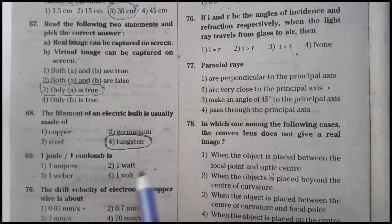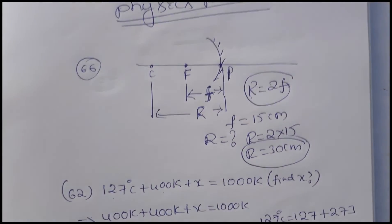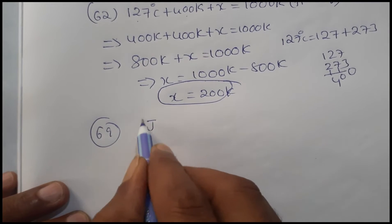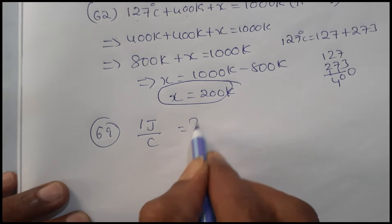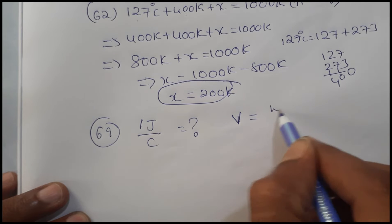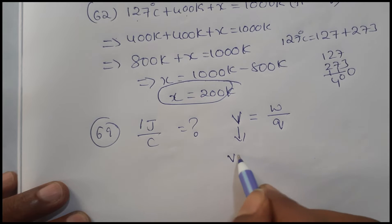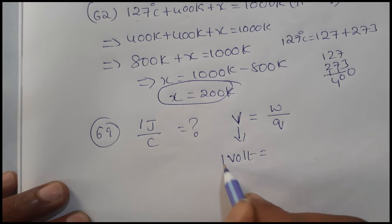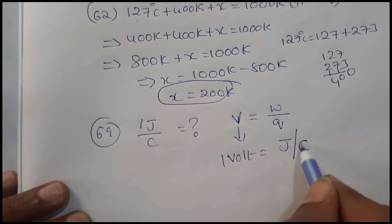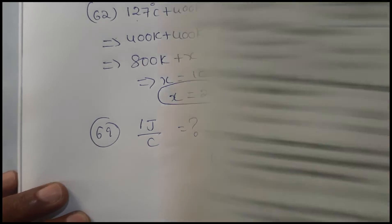Question 69: One joule per coulomb is equal to what? The potential difference V is given by the formula W divided by Q. The SI unit of potential difference is volt, so one volt equals one joule per coulomb. Therefore, one joule per coulomb equals one volt.